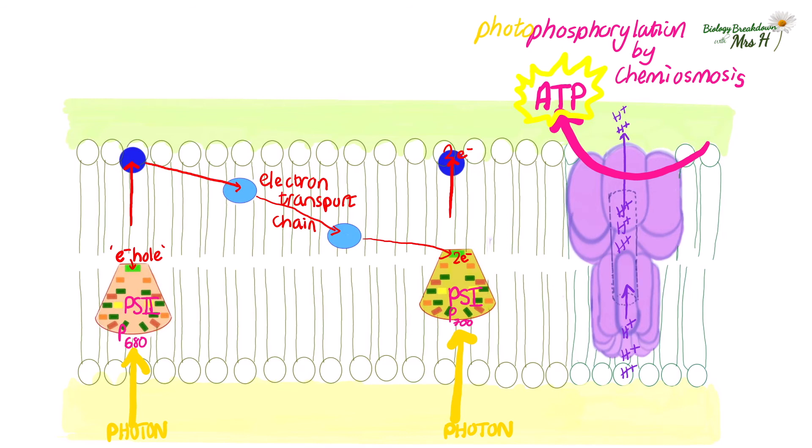Quick recap. Electron hole at photosystem 1 has been filled by the electrons that came from photosystem 2 down the electron transport chain. Right so that's been filled. We've still got an electron hole in photosystem 2.